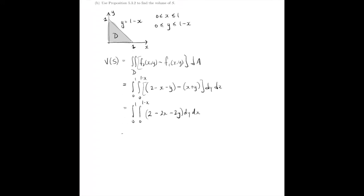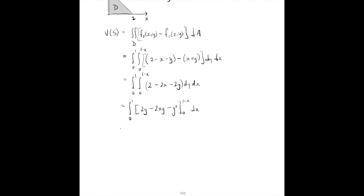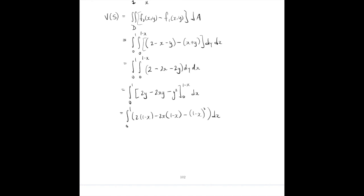Let's anti-differentiate: we get 2y - 2xy - y² evaluated from 0 to 1-x, then dx. Filling that in, we have the integral from 0 to 1 of 2(1-x) - 2x(1-x) - (1-x)² dx.